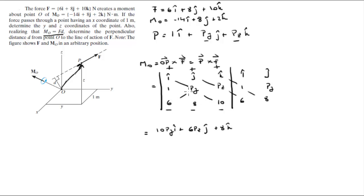And now you do your negative diagonals, which come out to be negative 6 times py times k goes right here. Negative 6py in the k. Negative 8 times pz times i is negative 8pz in the i. And negative 10 times 1 times j is minus 10. So when you add this together, you get that this is 10py minus 8pz in the i, plus 6pz minus 10 in the j, plus 8 minus 6py in the k.